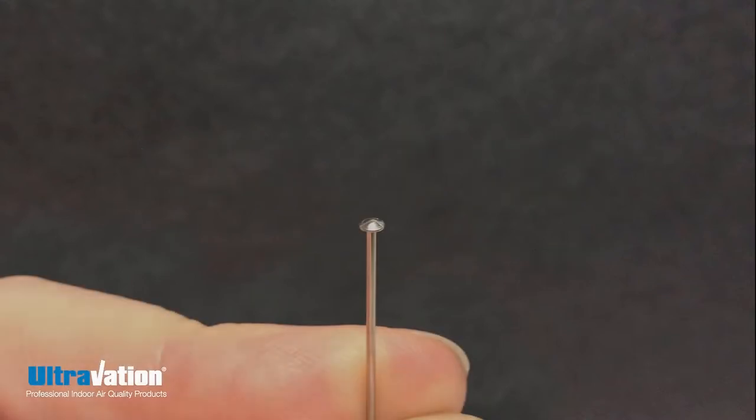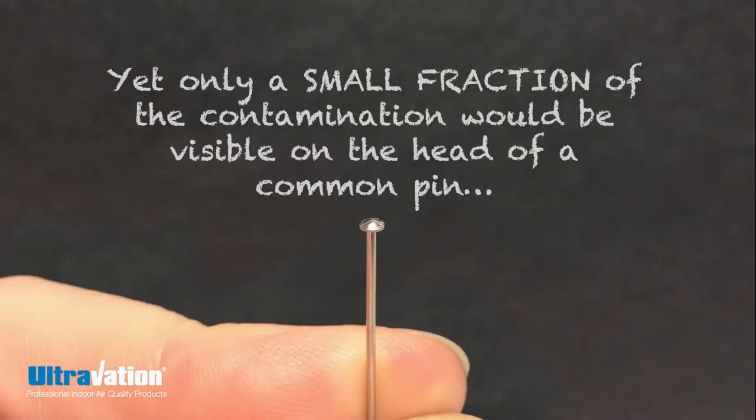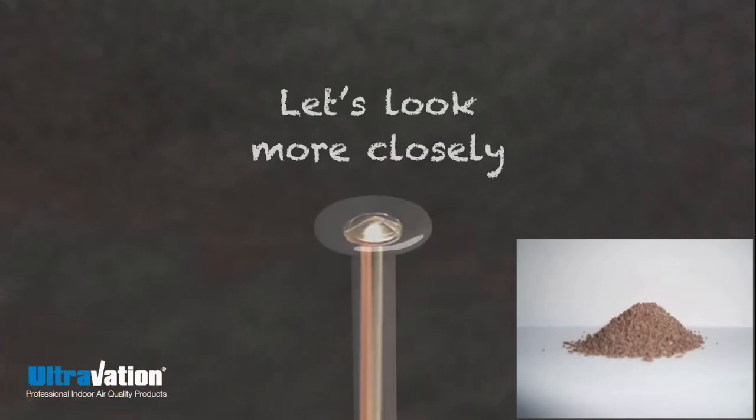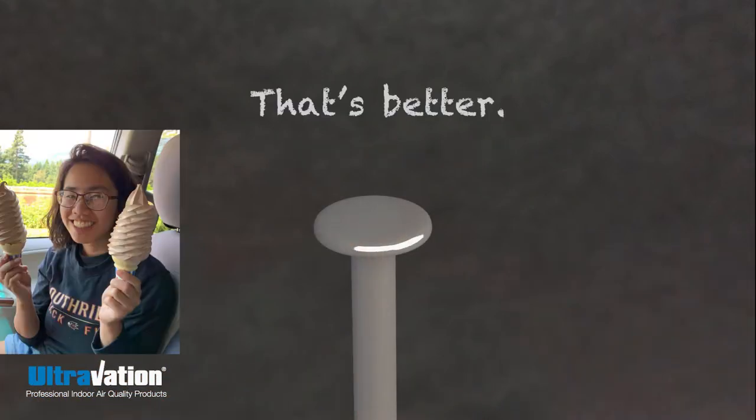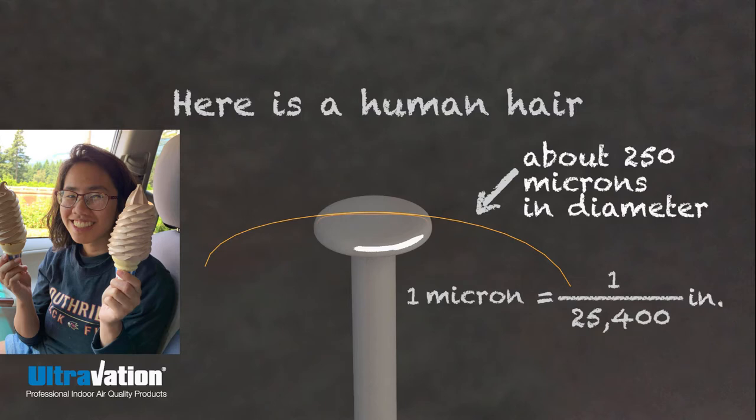Have you ever noticed the tiny particles in the air? We breathe little pieces of stuff all the time. Some of it comes from the ground, like dust. Some of it comes from our bodies or clothes, like lint, hairs, little pieces of skin.